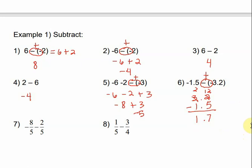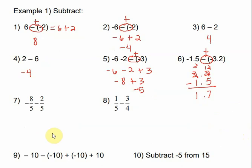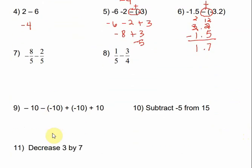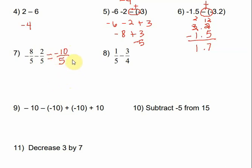Number 7: when dealing with fractions and adding or subtracting, we need a common denominator — which we have in this case. The denominator in my answer stays the same. Negative 8 and negative 2 have the same signs, so I add: 8 plus 2 is 10, but it should be negative. Reducing negative 10 over 5 gives negative 2.